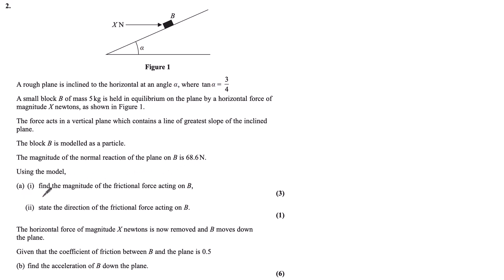Using the model, part A, find the magnitude of the frictional force acting on B. With mechanics questions, the first thing we should do is label some forces on our diagram. I'm going to start by labelling my reaction force. The normal reaction force has been given as 68.6 newtons. A normal reaction acts perpendicular to the surface your particle is making contact with, so the reaction force is 90 degrees to the plane.